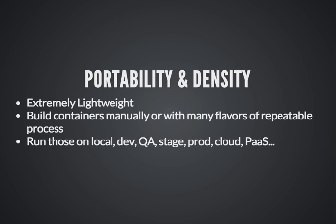Docker containers are extremely lightweight — effectively as lightweight as running processes natively. You can build containers manually or with repeatable build processes using Puppet, Chef, Fabric, or build scripts. And you can take these containers and run them on the local machine if it's Linux, or in Vagrant on a Mac, in dev, QA, staging, prod, on many clouds, on a PaaS, or on bare metal. You can ship this container all over the place.